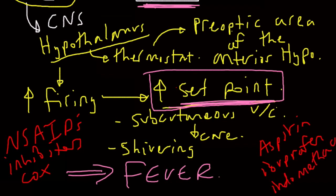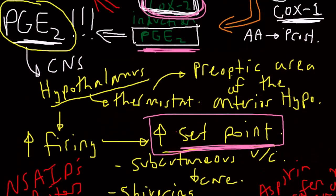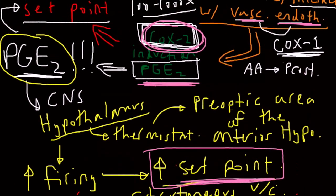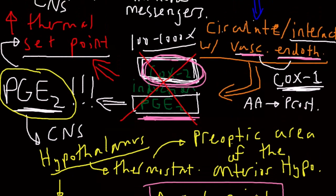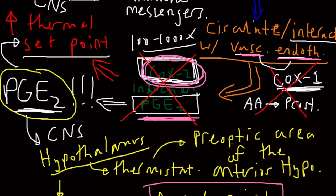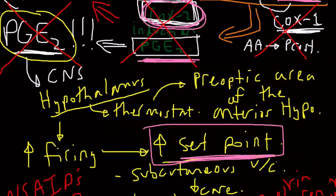an inhibition of this COX-2 mechanism and this COX-1 mechanism to reduce the amount of PGE2 formed, and therefore prevent any of the action at the site of the hypothalamus.